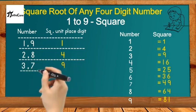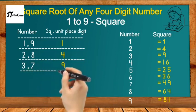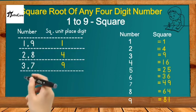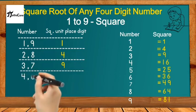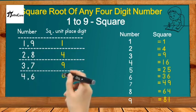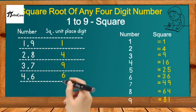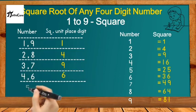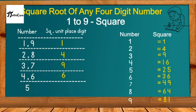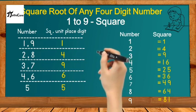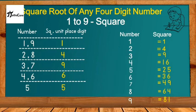Next, 4 and 6: 4² = 16 and 6² = 36, both have unit place digit 6. Finally, 5: 5² = 25, which has unit place digit 5. You must memorize this table to find the square root of any four-digit number. Using this table, you can find the square root of any four-digit number within a few seconds.